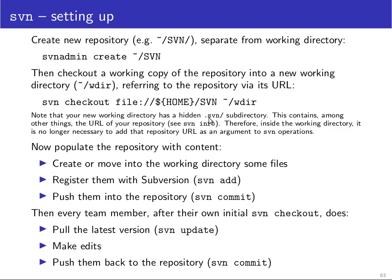Now we can populate the repository with content, and this involves three steps. You first either create some files — start writing your project — or copy files from an existing project into your working directory. Then you have to tell Subversion which files in the working directory it should actually look after and which not. For example, if you use a compiled programming language like C, the manually written .c and .h files you want to keep in the repository, whereas the compiler-produced .o files and executables which change all the time you don't want to keep in the repository, because you can just ask the compiler to reproduce these at any time.